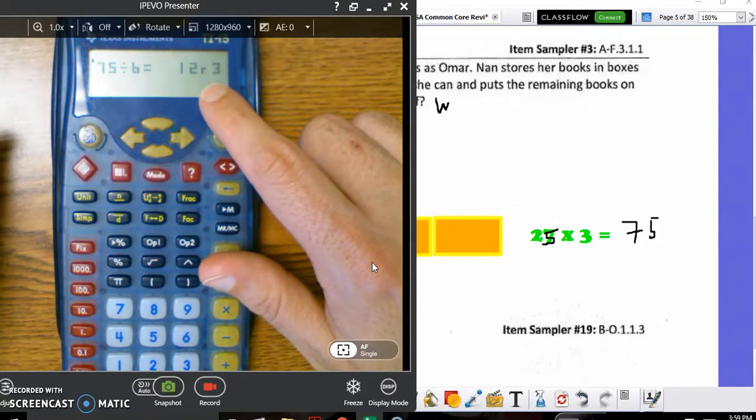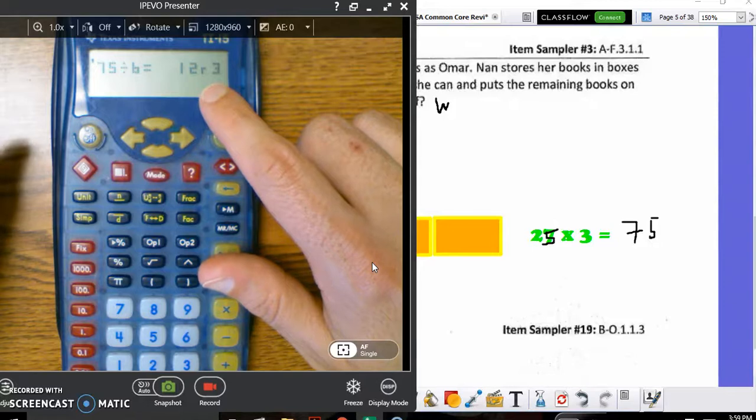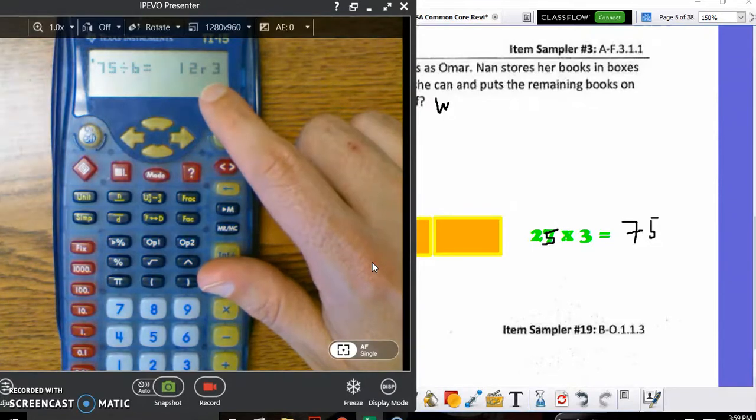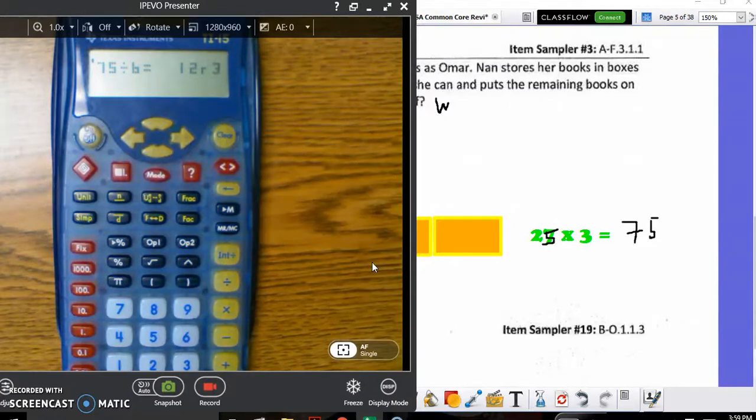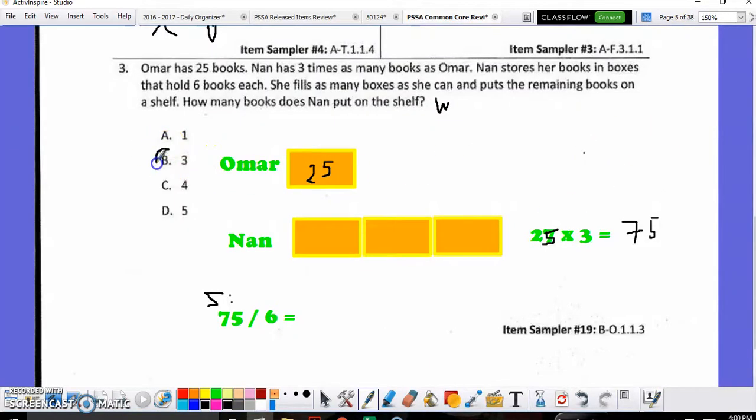Again, this is where the W comes into play. Because I'm looking for what books were left. Which, in this case, is my remainder. A remainder of three gets me my answer. In this case, B. Flip it over.